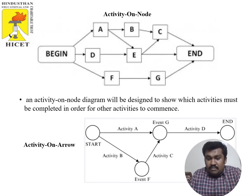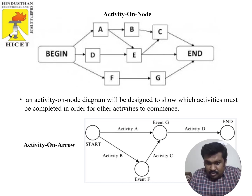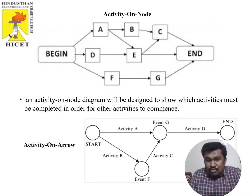In Activity on Arrow, each activity is represented on the link between two nodes. Activity A starts and must reach nodes U and G, then Activity D starts and ends, followed by Activity B and Activity C. This is the concept of Activity on Arrow.